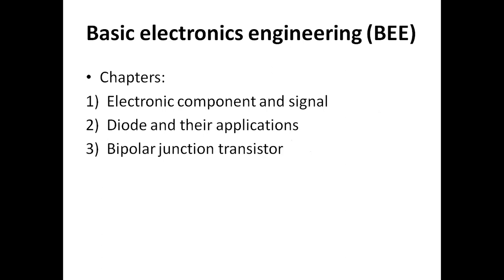In Basic Electrical and Electronics Engineering, there are two sections present. The first section is Basic Electrical Engineering and the second section is Basic Electronics Engineering. In the second section, there are three chapters: Chapter 1 is Electronic Components and Signals, Chapter 2 is Diodes and Their Applications, and Chapter 3 is Bipolar Junction Transistors. The first section carries 35 marks and Basic Electronics Engineering also carries 35 marks, for a total of 70 marks.